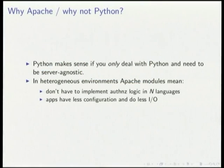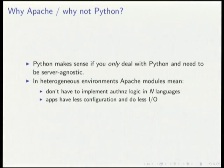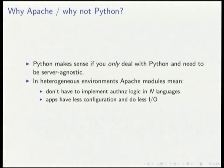Why do this in Apache and not in Python? A Python-only approach would make sense if you only deal with Python and need to be server-agnostic — these were Apache modules, so if you want your app to be easy to deploy on Nginx or Apache or whatever, this approach isn't going to work on its own. But in a heterogeneous environment, using the Apache modules means you don't have to implement authentication and authorization logic in different languages, and it means the applications themselves have less configuration and do less work and less IO.